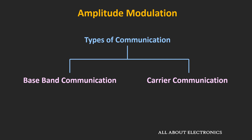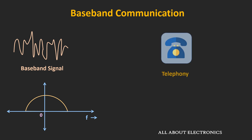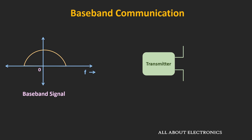In baseband communication, the message signal is transmitted without any kind of modification. The term 'baseband signal' refers to the original message signal generated from the source itself. For example, in telephony, the audio signal is an example of a baseband signal, and it contains frequencies from 0 to 3 kHz. Because of these low frequencies, this baseband signal cannot be transmitted over a radio link.